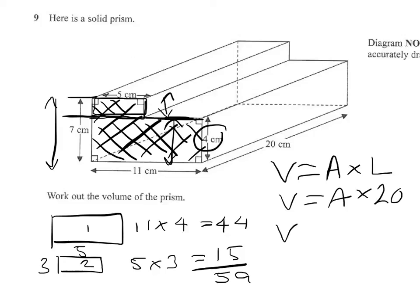Our final volume is going to be 59 times 20. Now, that's 590 times 2. This is a calculator paper, so you could do that. But the answer will be 20 short of 1200, because 590 is 10 short of 600. So that's 1180 centimeters cubed. And that's your answer.